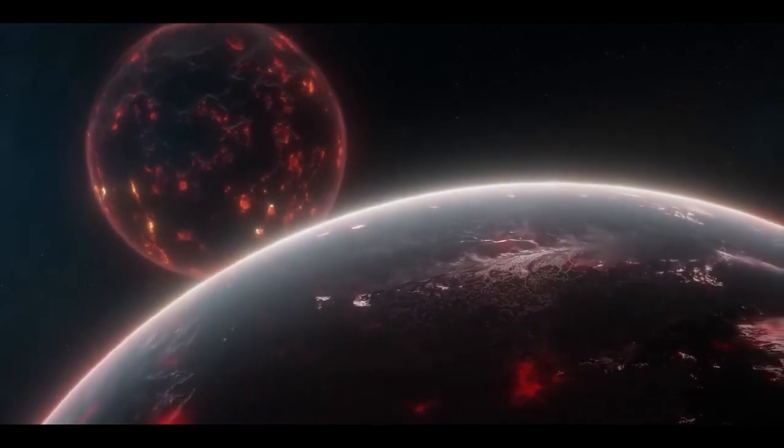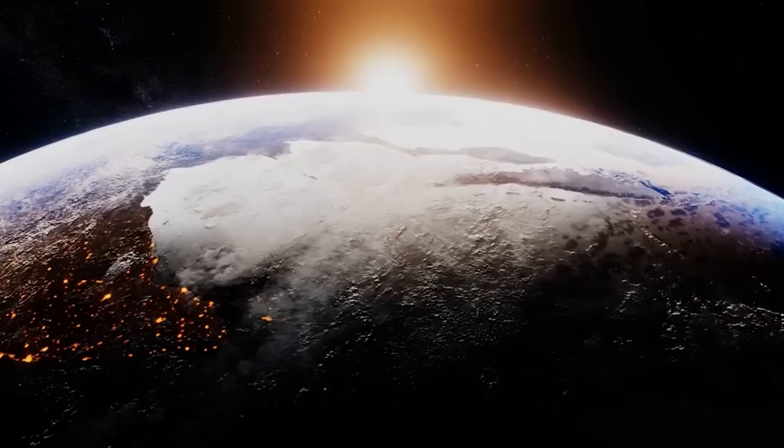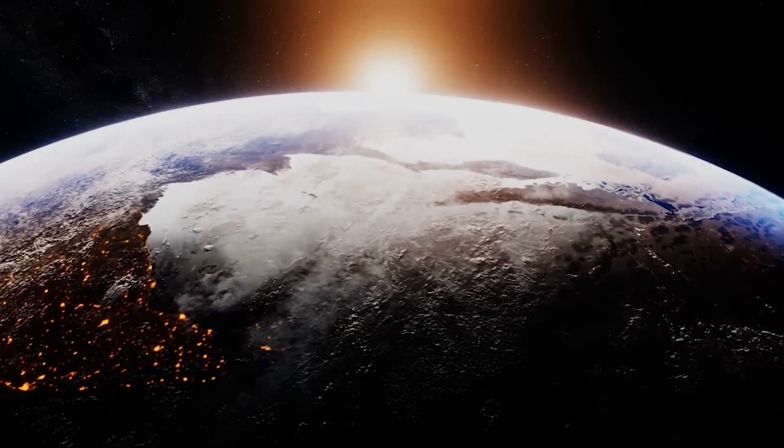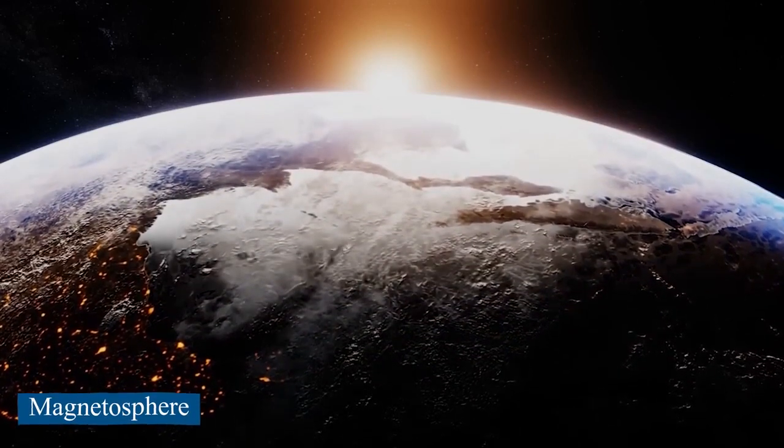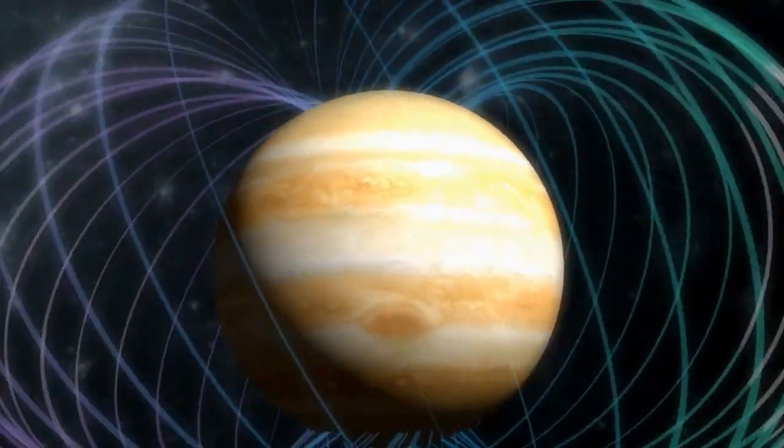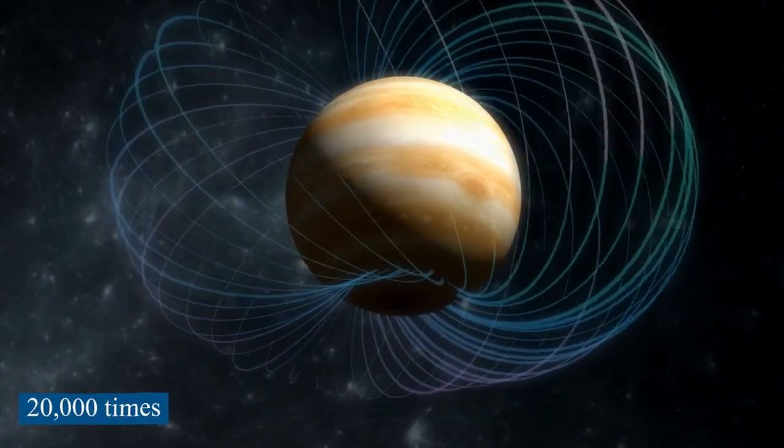Auroras happen on both Earth and Jupiter when charged particles from the sun interact with a planet's magnetic field, called the magnetosphere. The magnetic field around Jupiter is about 20,000 times stronger than the one around Earth.